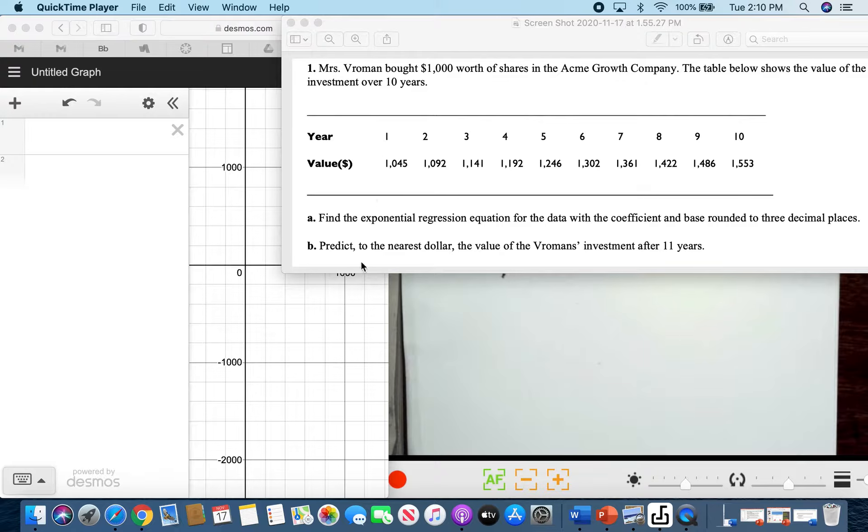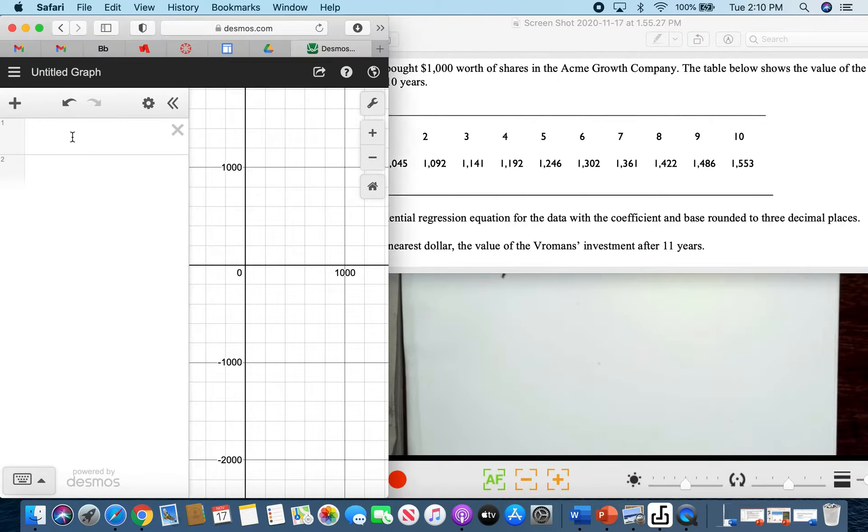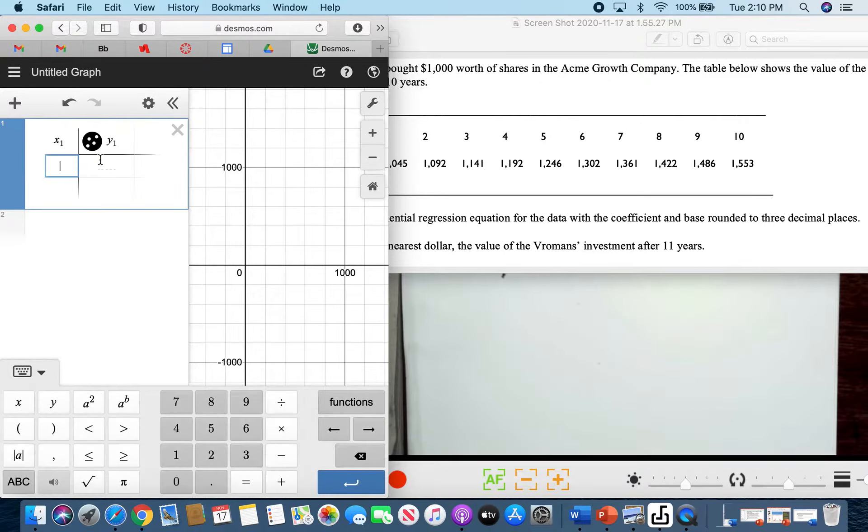If you have 2000 represented as one, you're asked to find the exponential regression equation. We could probably prove that it's really the best fit for our function. So the first thing we should do is put our table in Desmos.